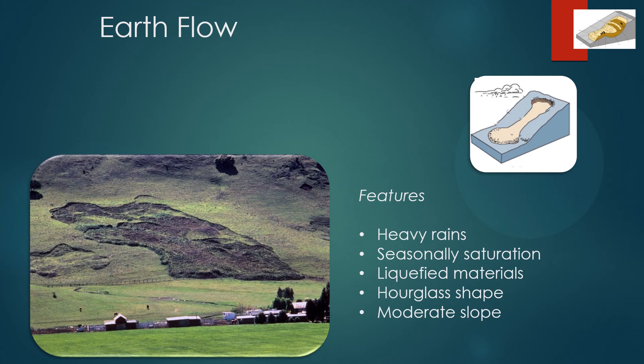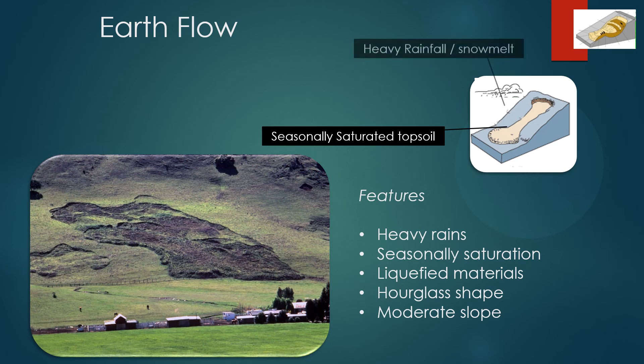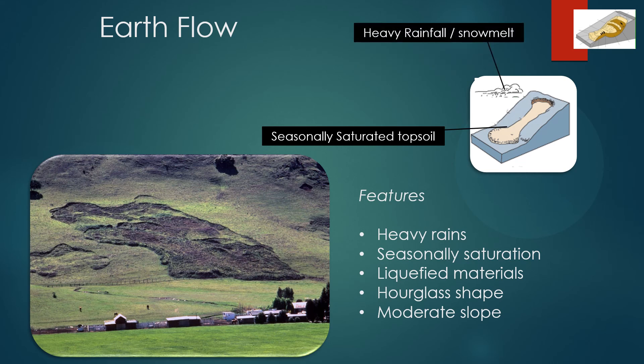Earth flows occur on moderate to steep slopes when the topsoil or overburden seasonally becomes saturated by heavy rains. The material slumps away from the upper part of the slope, leaving a scarp, and flows down to form a bulge at the toe.